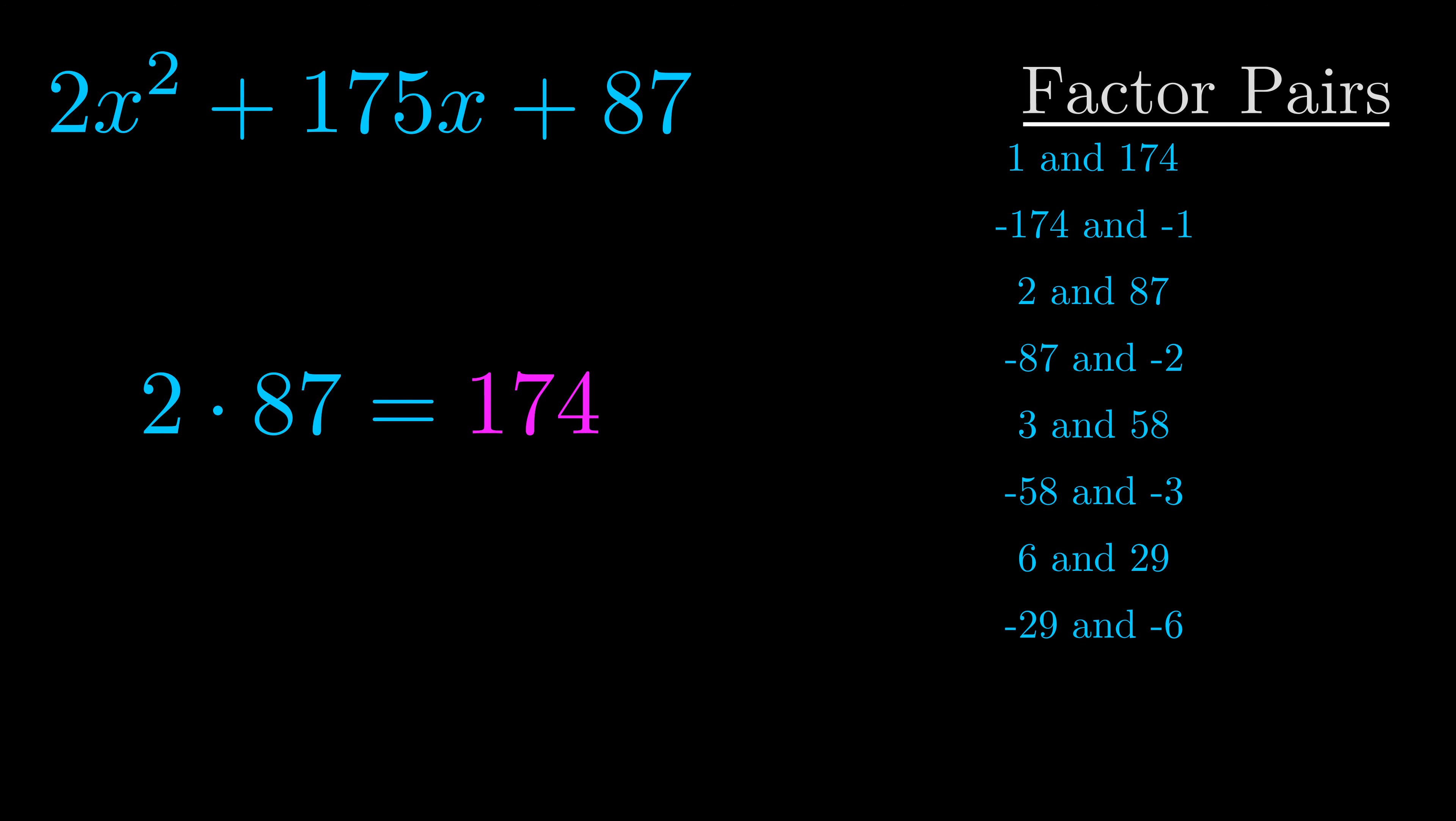The b value is the coefficient on the x term. That's the middle term, the one that we haven't done anything with yet. And really this is the only factor pair that we need.